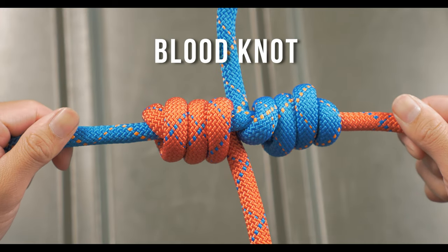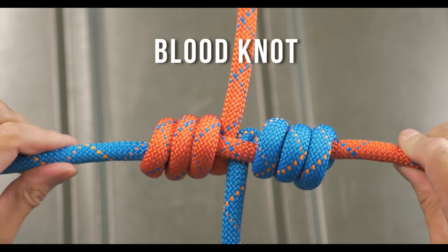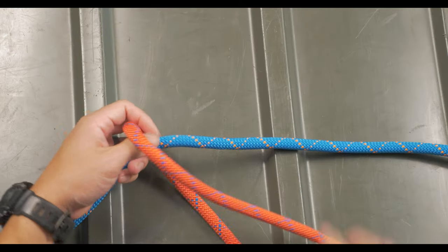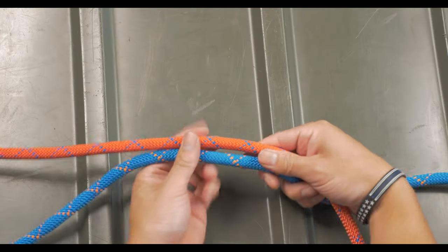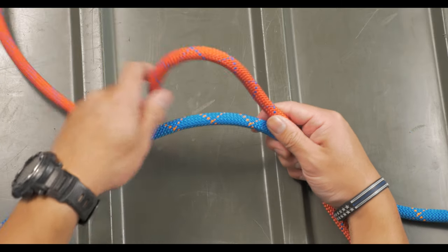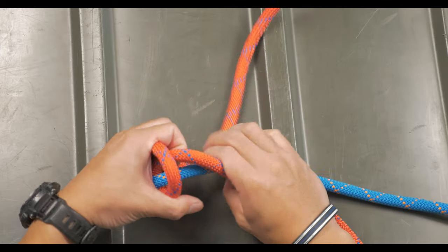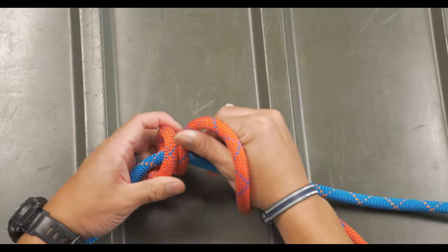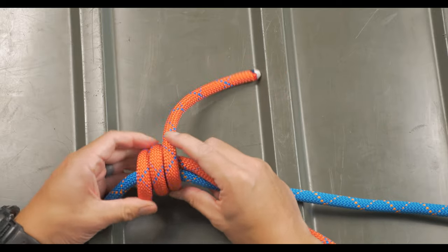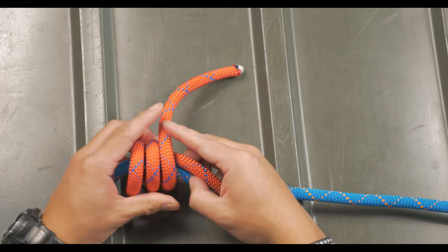The first one is going to be the blood knot. This one works really well for monofilament lines, but also works with standard rope and line as well. Starting with the working ends overlapping each other and going opposite ways, you'll begin to take the first working end and loop itself around itself and the other line. It helps to keep the loops tight and you'll do three to five loops. When you're done doing the loops, you'll tuck the working end between the two lines.